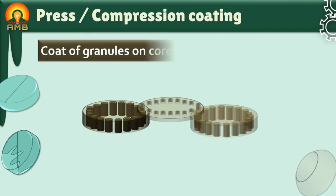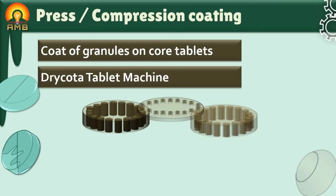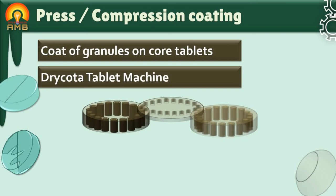In this technique, the granules of coating material are prepared and a layer of coating material is placed below and above the preformed tablet or core tablet. Compression coating is done in a specialized machine which is called as dry cotta rotary tablet machine. The whole operation is carried out automatically in a number of steps.